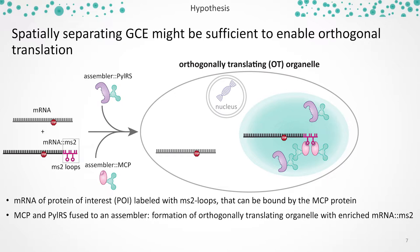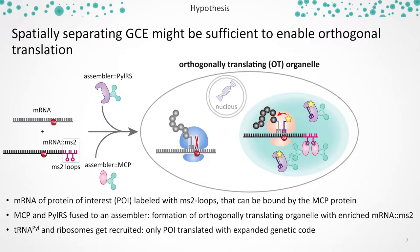We then envisioned co-expressing our pyrolysine tRNA synthetase and the MCP protein fused to something we call an assembler moiety, which would form an organelle in the cell and enrich and detect mRNA with MS2 loops. Subsequently, this should also recruit the pyrolysine tRNA and some ribosomes. Then only the protein translated within the organelle should get modified with the non-canonical amino acids, while proteins translated in the cytoplasm should get terminated when they encounter the stop codon.